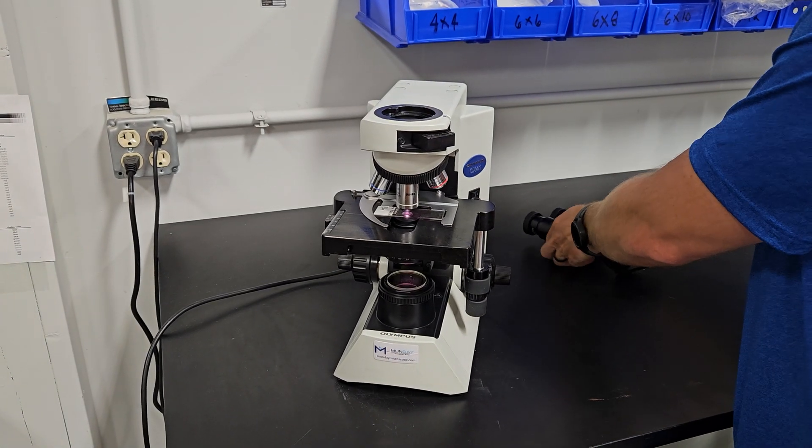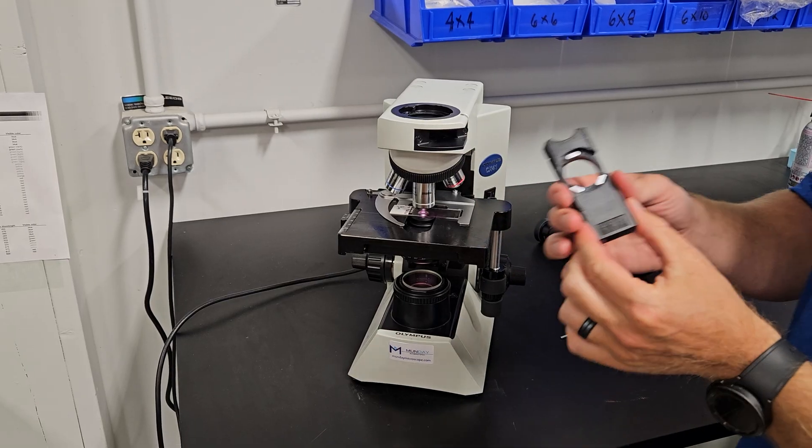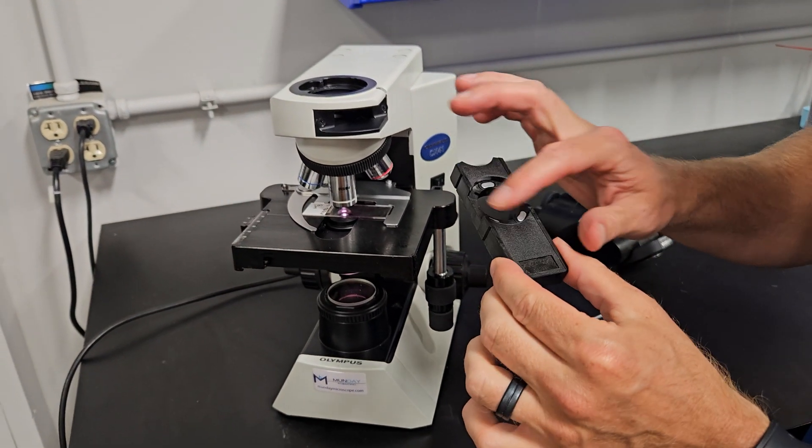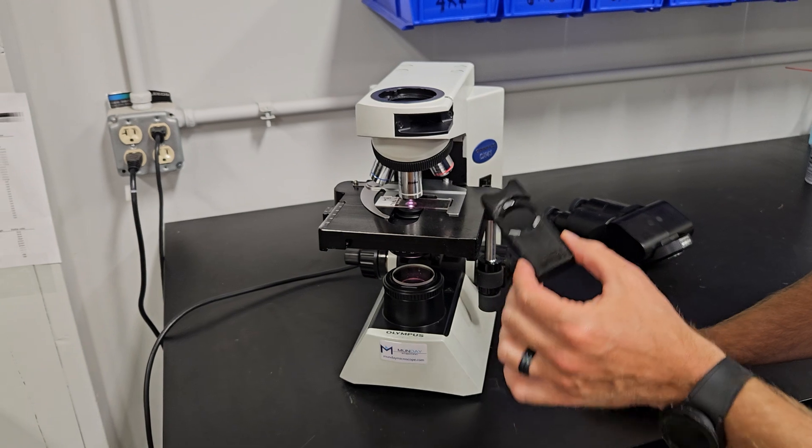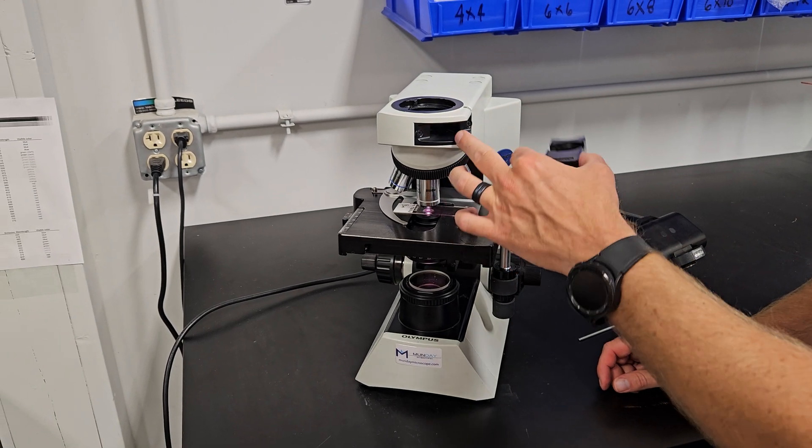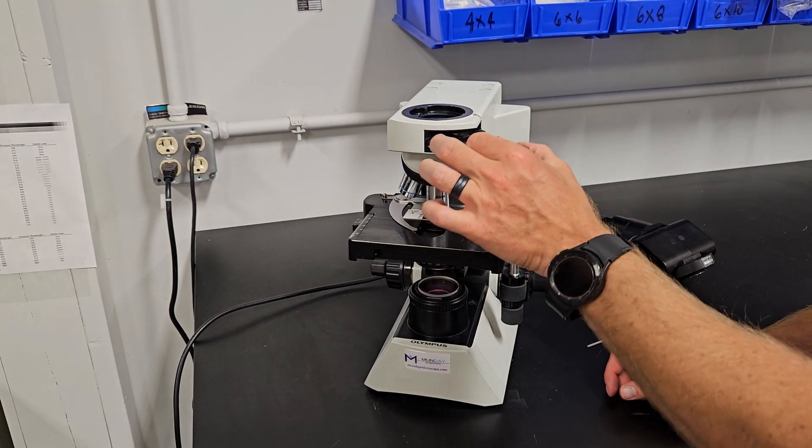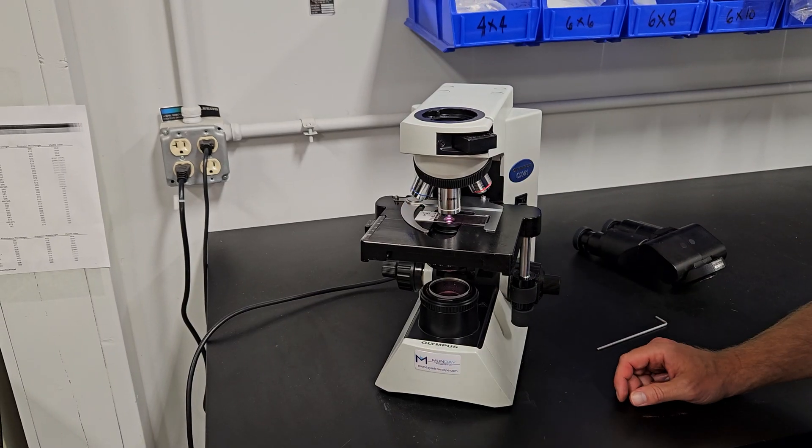Let's set this off to the side. This right here is where you would put the analyzer. If you decided you needed an analyzer on this microscope, you can also put a U-GAN in here if you needed to do Congo red or gout.